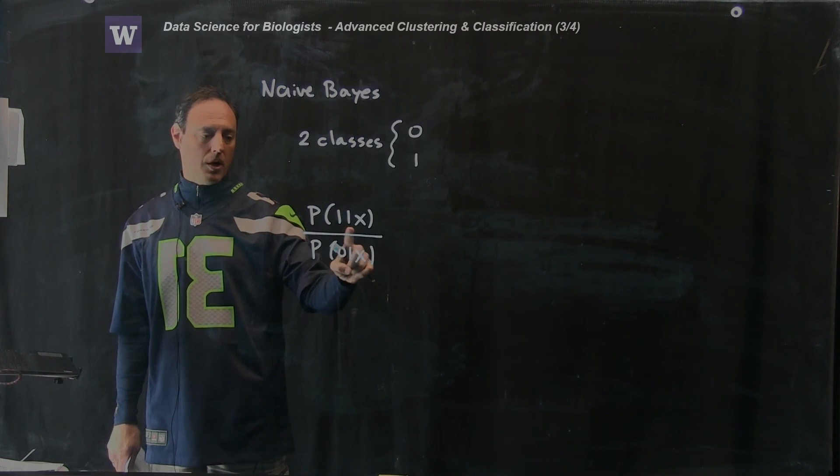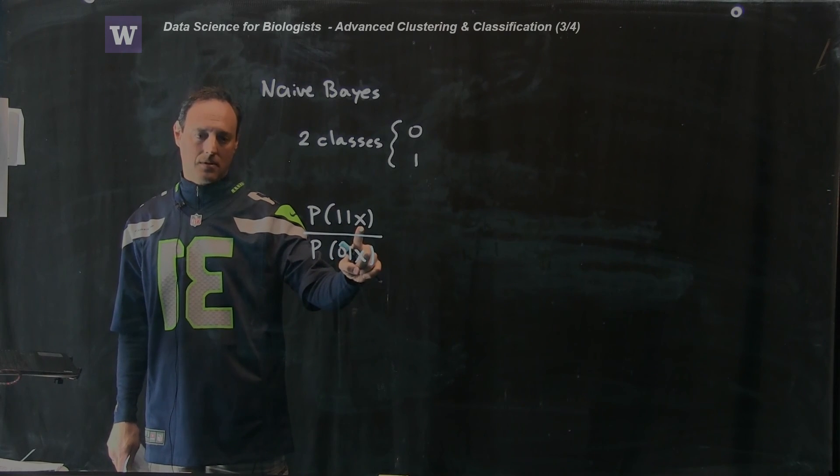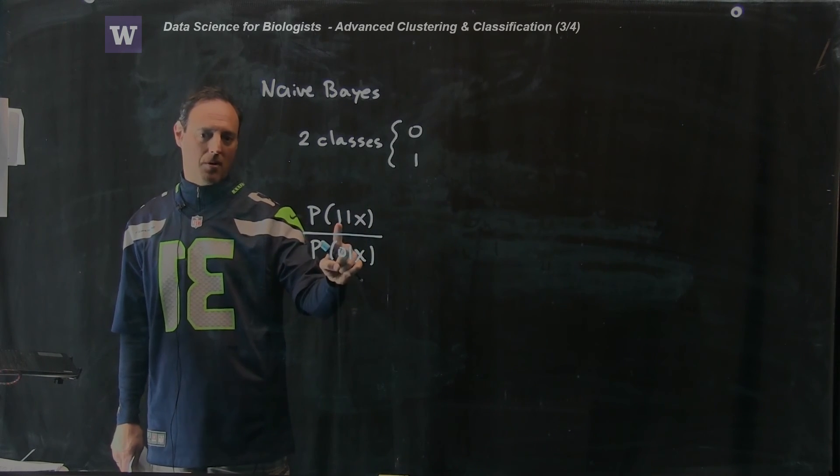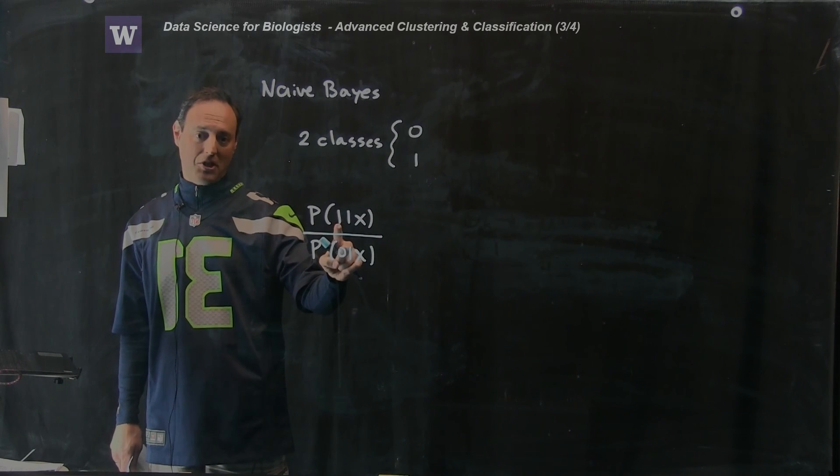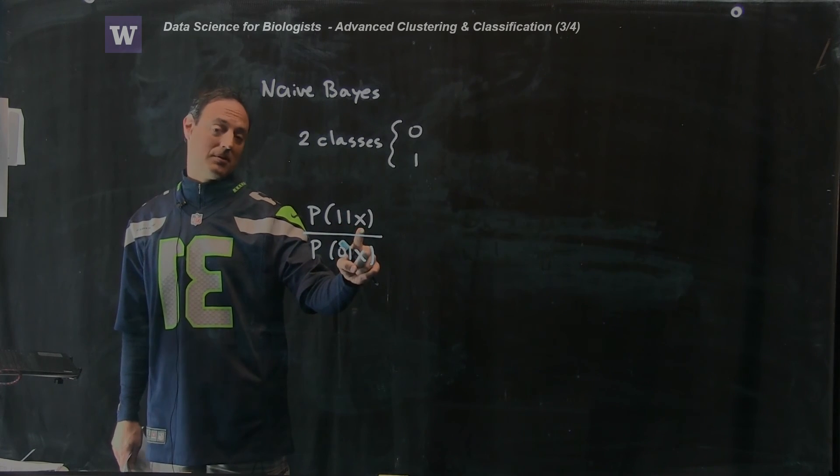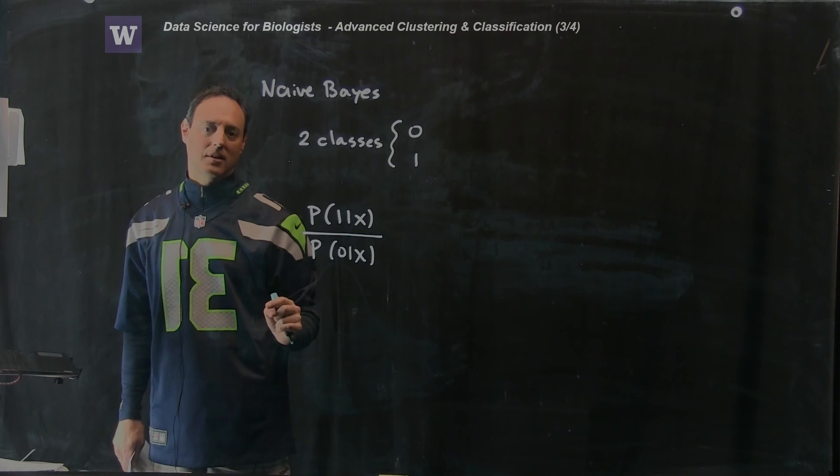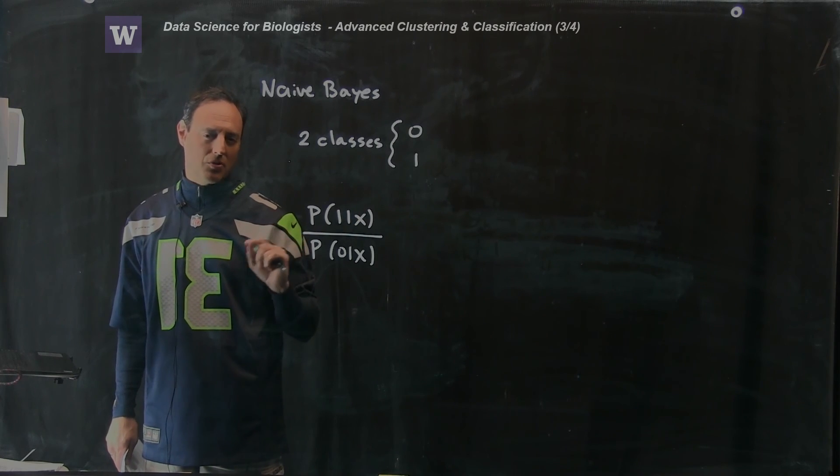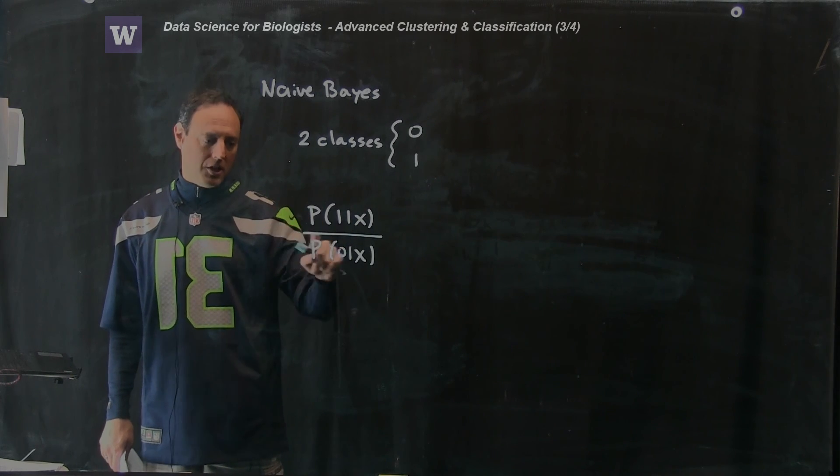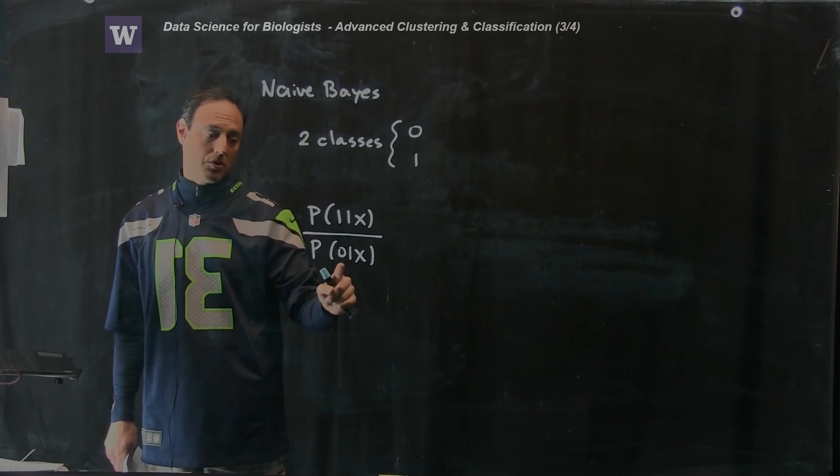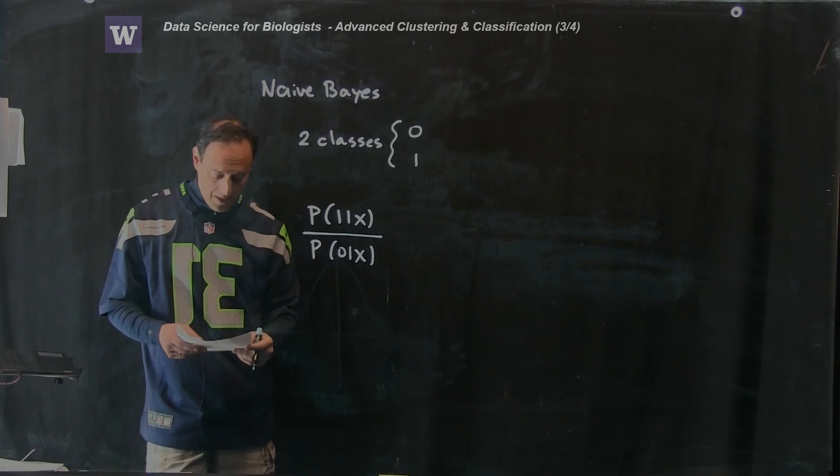Or even I could say, what's the probability of being 70 degrees tomorrow given that it's January 1st? Again, something that will influence your probability. So that's what these conditionals mean. What is the probability of being a 1 given the data x? Same statement as what's the probability of being 70 degrees given that it's January? It's pretty low.